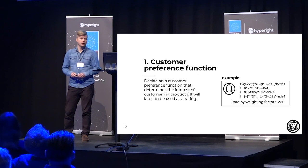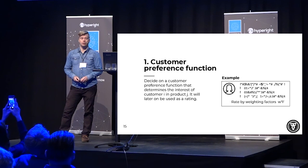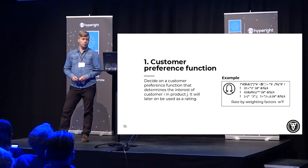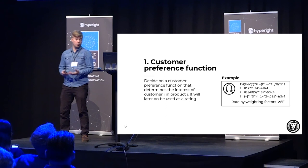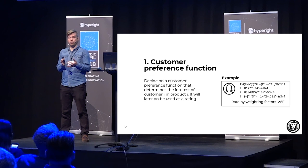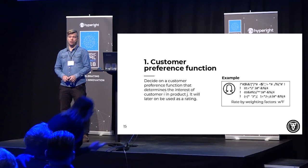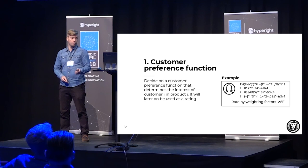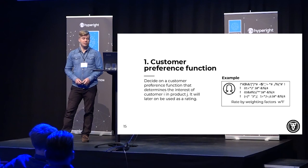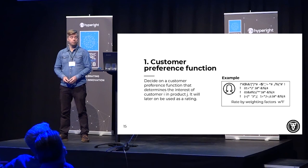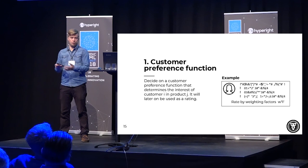Starting with the customer preference function, we want to find something instead of a rating that symbolizes the taste of a customer across all products. A natural way is to go to data: we look at a specific product and a specific customer, and we can take a look at how many views a product has been given, how many they have purchased, and time spent. Depending on your application, you can do a lot more here. What we can then do is simply weight this together — deciding how much it matters how much they view things versus how much they buy things. So we have a preference function that uses data to get a handle on how much people actually like the product.